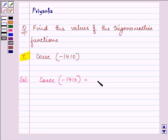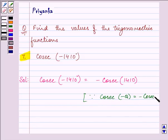This can be written as minus cosec of 1410 degrees, because cosec of minus theta is equal to minus cosec theta.